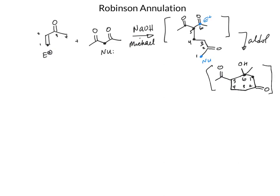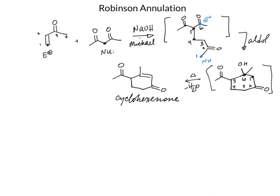But that is typically not the final product as well, because we're going to do this under thermodynamic conditions with enough heat to promote the dehydration step — that's the condensation step of the reaction where we lose a molecule of water. And that's typically the driving force here to go to the stable product, which is an enone or an alpha-beta unsaturated carbonyl. In the Robinson annulation, what we form is a cyclohexenone product.